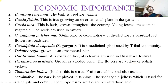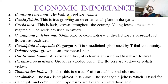Economic importance: the family is of vast economic importance. It contains plants like Tamarindus, Parkinsonia, and Hardwickia, many of which are medicinally and economically important. Some are medicinal plants and some are ornamental plants. Bauhinia purpurea bark is used for tannin. Cassia fistula is an ornamental plant grown in gardens for its beautiful flowers — long racemes bearing yellow or white flowers.